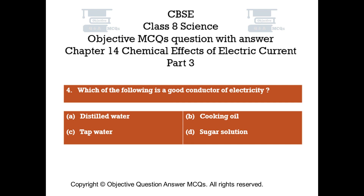Question number 4. Which of the following is a good conductor of electricity? Option A: Distilled water. Option B: Cooking oil. Option C: Tap water. Option D: Sugar solution.